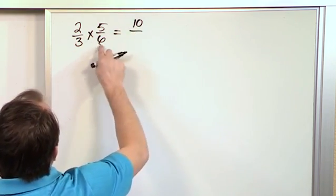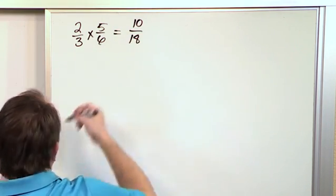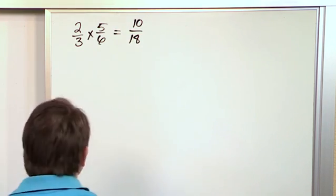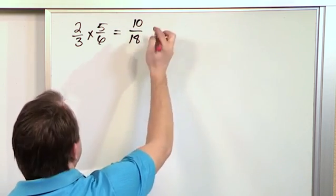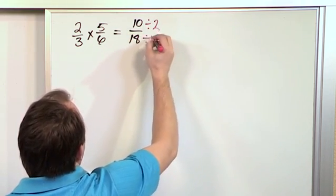2 times 5 is 10. 3 times 6 is 18. So the answer is 10/18, but we always try to simplify. We know these are both even numbers, so we divide by 2, divide by 2.